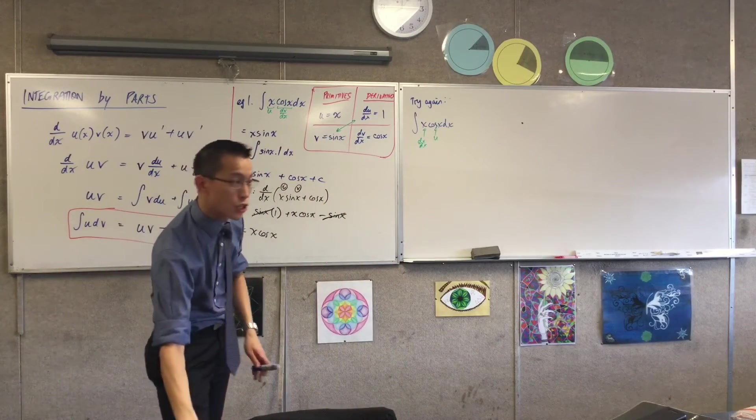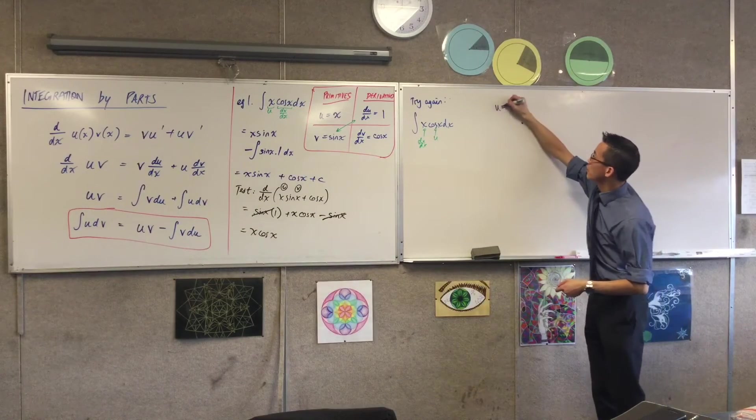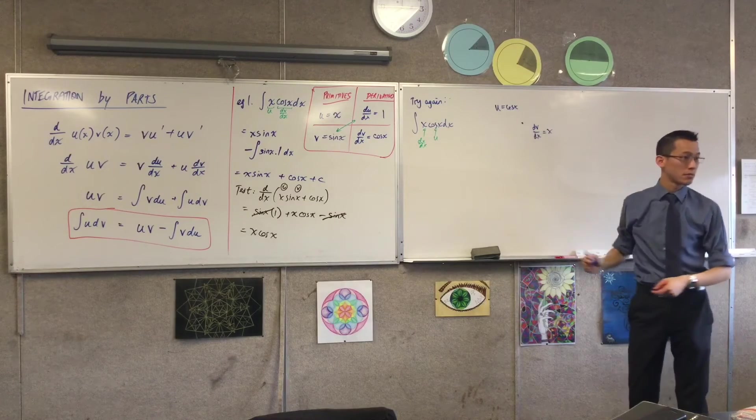I'm going to try again. I'm looking for two primitives and two derivatives. So I've let u equal cos x, and I've let dv/dx equal x.